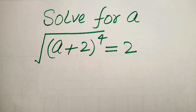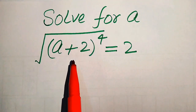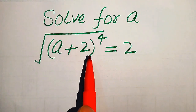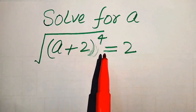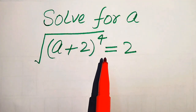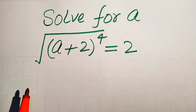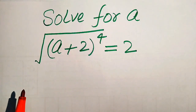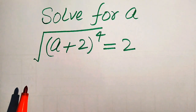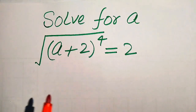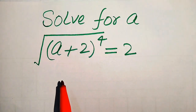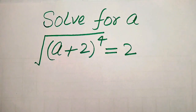Hello everyone. How to solve this problem for the values of a, if we have the square root of (a+2) to the power of 4, equals 2. First we find all the roots of this equation, and at the last we will check which of the roots are solutions of this equation and which of the roots are extraneous roots.